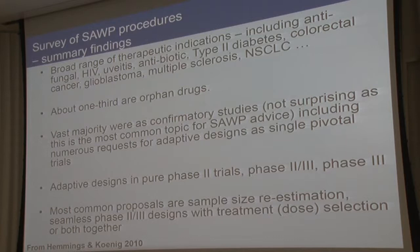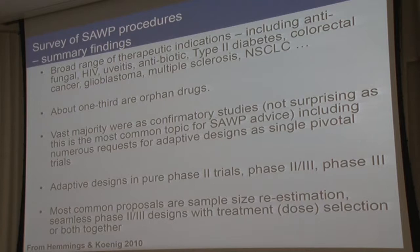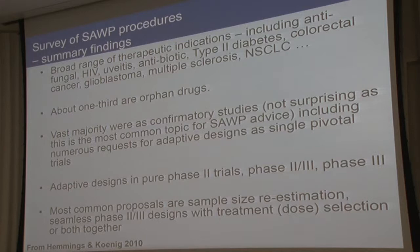Our findings showed a broad range of therapeutic indications — from HIV to type 2 diabetes to multiple sclerosis — so we couldn't identify a specific indication where only adaptive designs are applied. Very interestingly, one-third of proposals dealt with orphan drugs. The vast majority were confirmatory studies, which is not surprising since the scientific advice working party focuses on phase 3. We saw adaptive designs in phase 2, seamless phase 2/3 designs, and also pure phase 3 designs. The most common proposals were sample size reassessment, followed by seamless phase 2/3 designs with dose selection. Five years ago, subgroup selection was not really an issue, but it is coming now.